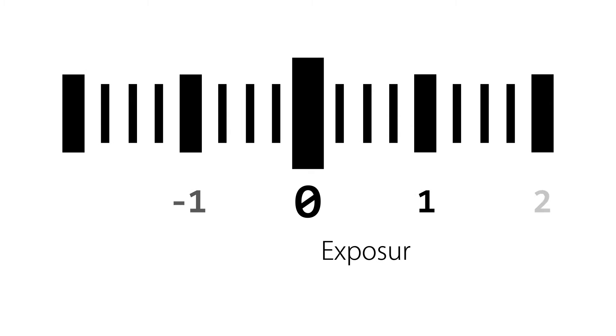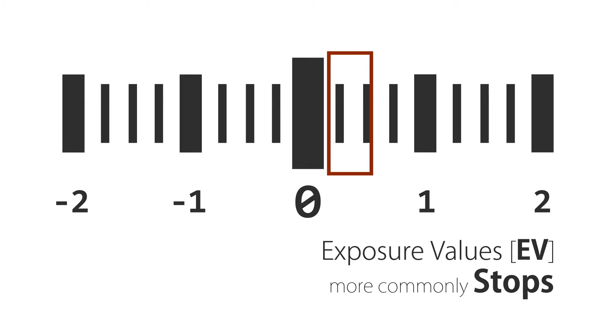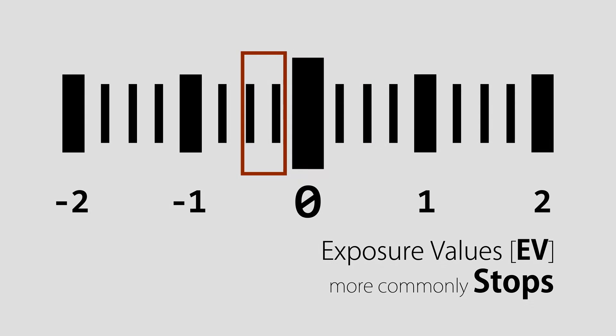Exposure is measured on a meter and exposure values, which are usually abbreviated to EV or more commonly referred to as stops. Typically you want to expose your image at zero on the meter, although you may sometimes want to expose one stop above or below to compensate for bright or dark spots.